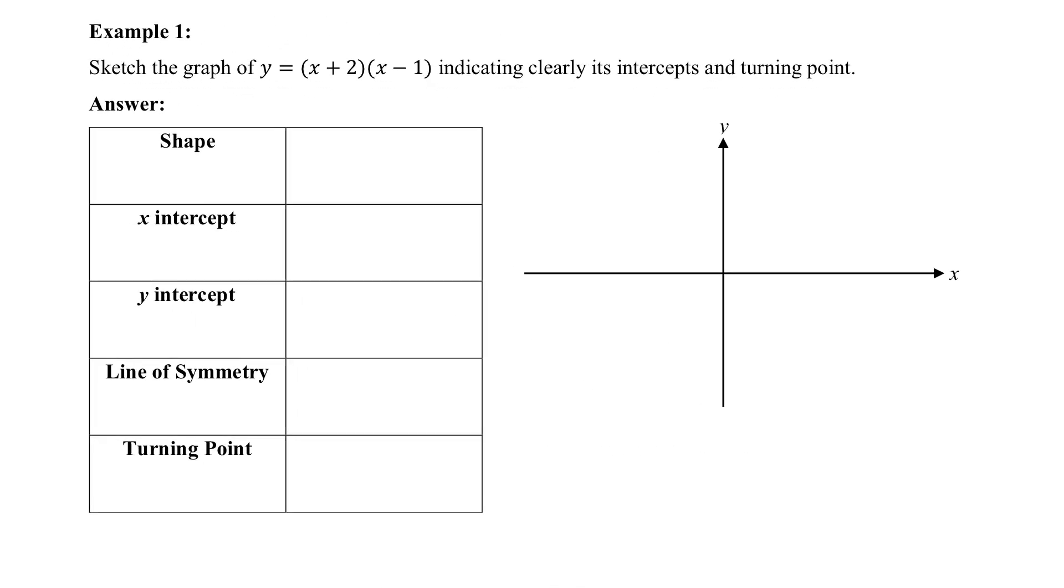Right, so in example one, now we are only just given the equation. And we are expected to do the sketch. So, as mentioned before, everyone, these are the things that we have to look out for and actually find the exact values of or find more info on. So, first and foremost, we'll start with the shape. What shape is this? Looking at the equation, we notice that if I were to expand it out, I would get a positive x-squared coefficient. And because it's positive, it will have a u-shape. So, later on, we're definitely going to be drawing a u-shape that bowls like this.